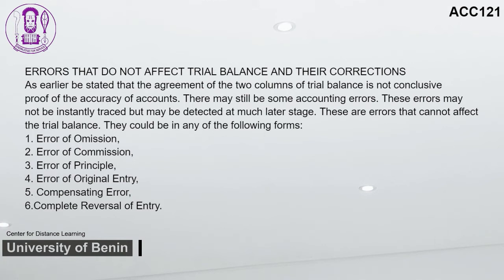Errors that do not affect the trial balance include: 1. Error of omission — a transaction is completely or partially omitted, and if completely omitted, both debit and credit are affected equally so the trial balance is not affected. 2. Error of commission — a transaction is posted to the wrong account within the correct class of account. 3. Error of principle — a transaction is posted to a different class of account. 4. Error of original entry — an incorrect amount is recorded in the subsidiary account and the same incorrect amount is posted to individual accounts. 5. Compensating error. 6. Complete reversal of entry.